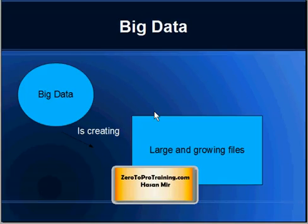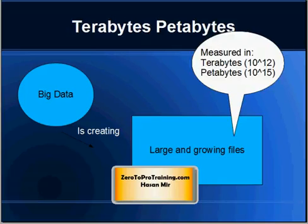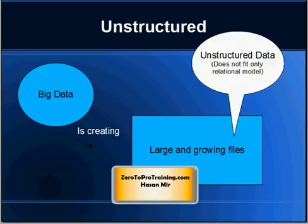Hadoop is a set of tools that supports running of applications on Big Data. There is no particular definition for Big Data, but here are some attributes. Big Data is creating large and growing files on almost a daily basis, and these files are measured in terabytes and petabytes. A terabyte is 10 to the power 12 and a petabyte is 10 to the power 15 — so we are talking about very large files. One attribute of this Big Data is that it is unstructured. It is not organized data in a relational database with nicely created tables and defined columns. It is unstructured, and that creates a challenge.